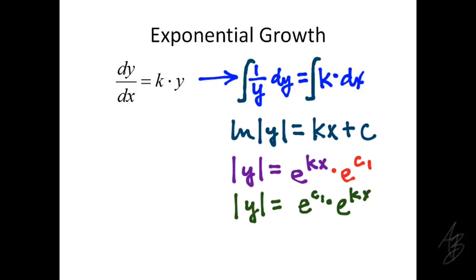We'll rewrite this here. I want to put the e to the c first. The definition of absolute value is the positive if it's y or the opposite if it's negative. So we can get rid of that but we know it's going to be a positive or negative e to some constant.